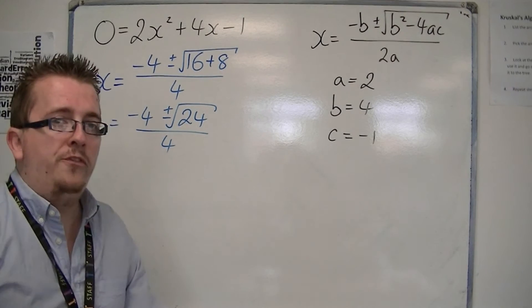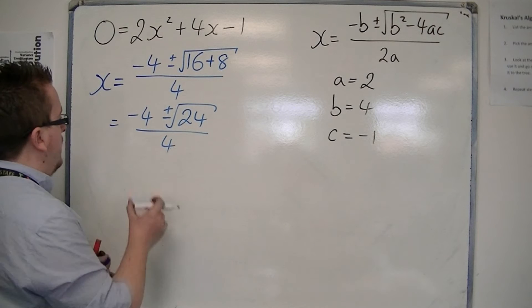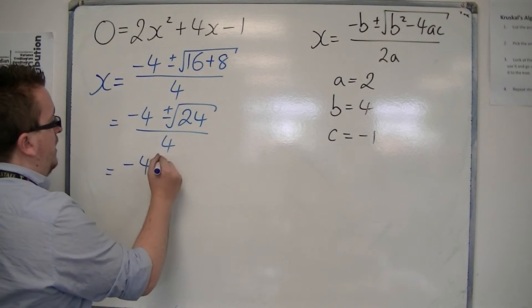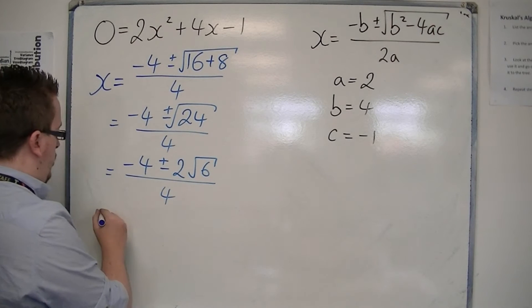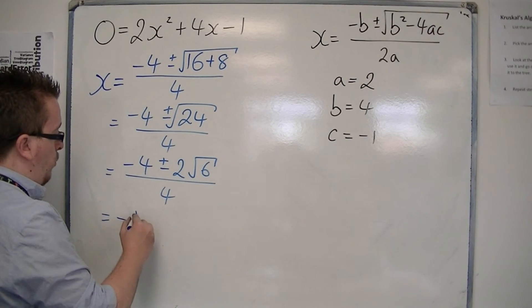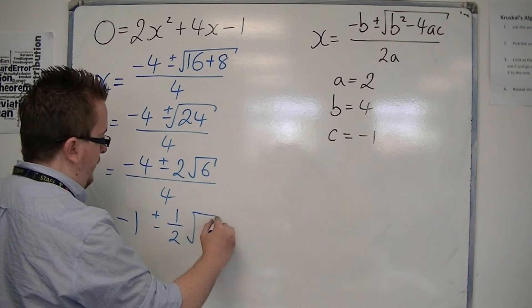Now square root of 24 is 2 root 6. So we have minus 4 plus or minus 2 root 6 over 4, which you can write as minus 4 divided by 4 is minus 1, plus or minus 2 over 4 is a half root 6.